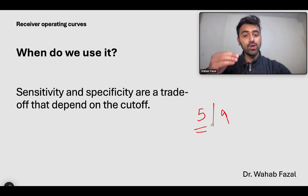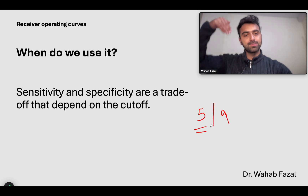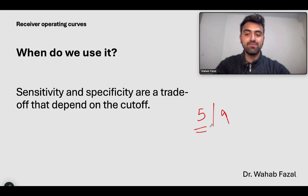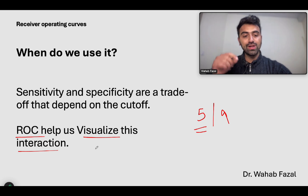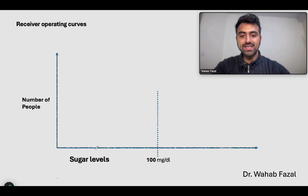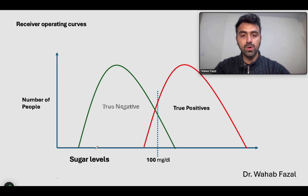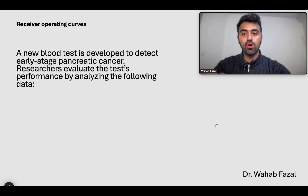As I discuss in my previous video, when you decrease the cut-off, you increase the sensitivity, and whenever you increase the sensitivity, the specificity goes down — and the other way around as well, vice versa. So receiver operating curves help us visualize this interaction. When a researcher is trying to set a cut-off for a particular test, he knows what sensitivity and specificity he will get for a particular cut-off level. Whenever you increase or decrease the cut-off, the effect it has on sensitivity and specificity is what we want to know in receiver operating curves.